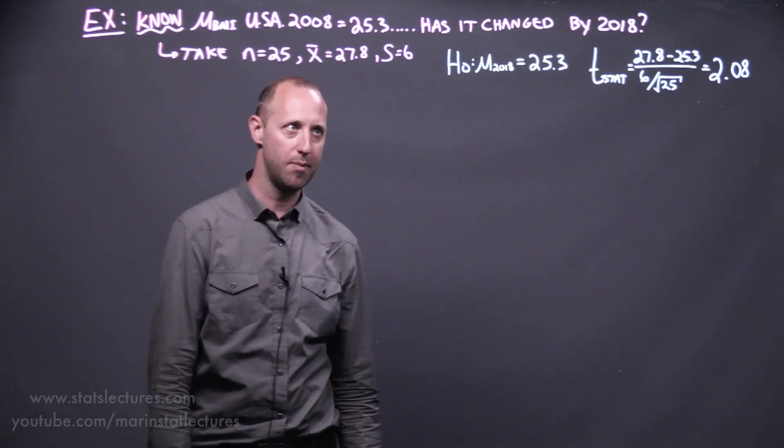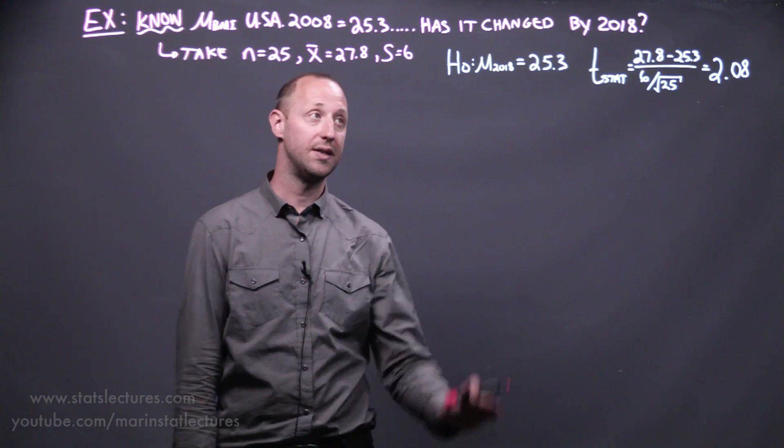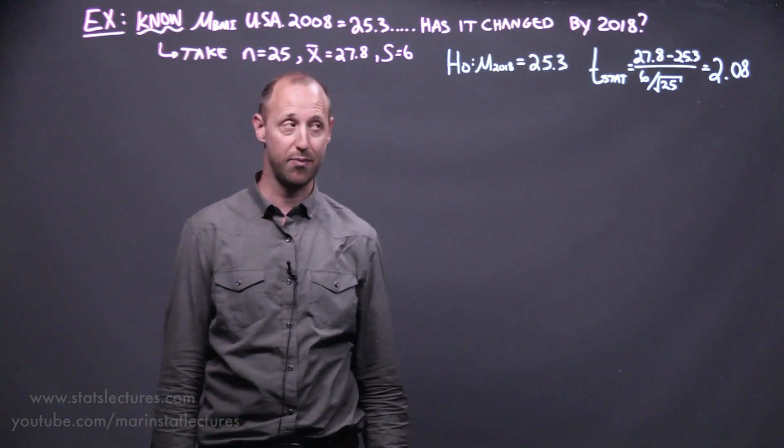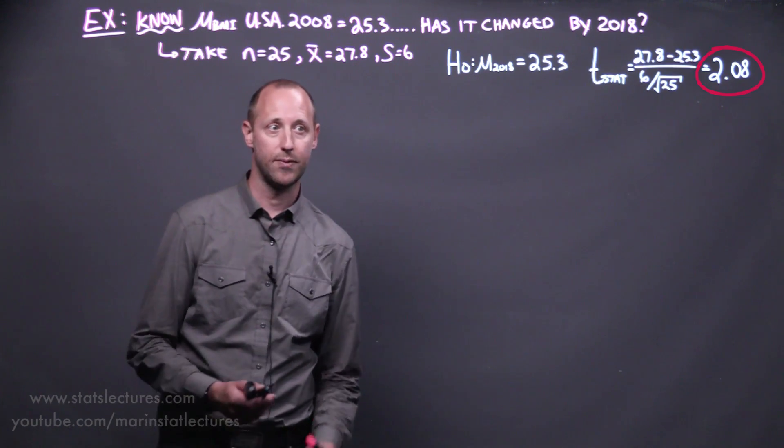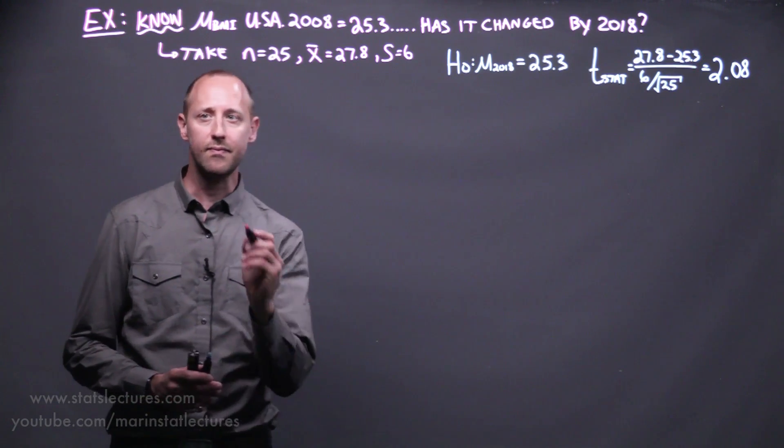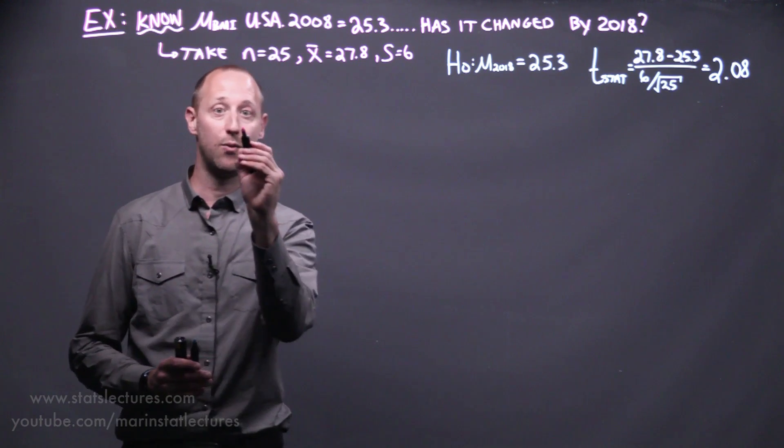We start with a null hypothesis that the mean in 2018 hasn't changed, it's 25.3 and our test statistic came out to be 2.08. So first let's look at the idea of a one-sided alternative.